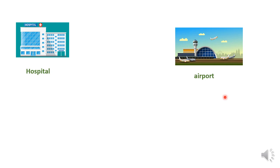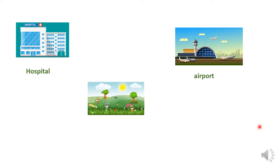Next we have park. Park is a place full of trees, grass, and flowers. It's a very beautiful outside place. This is the word we can write: 'park'. It starts with letter P — park.